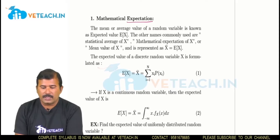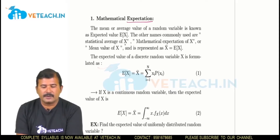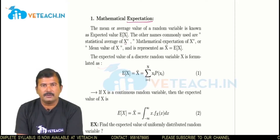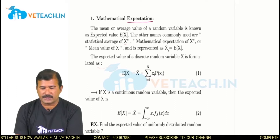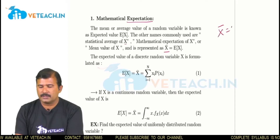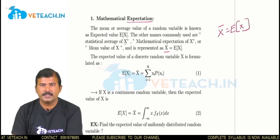The other names for the expectation are: the statistical average of the random variable x, mathematical expectation, mean value, or simply expected value or expectation of x. It is represented as x-bar, and the mathematical representation is E of x.